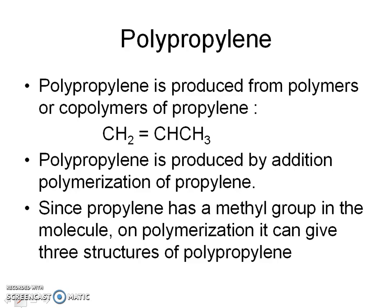Polypropylene is produced from polymers or copolymers of propylene, which has a chemical structure CH2=CH-CH3. Polypropylene is produced by addition polymerization of propylene. In addition polymerization, a polymer is formed by addition of monomer but without elimination of a simple molecule like H2O or HCl.